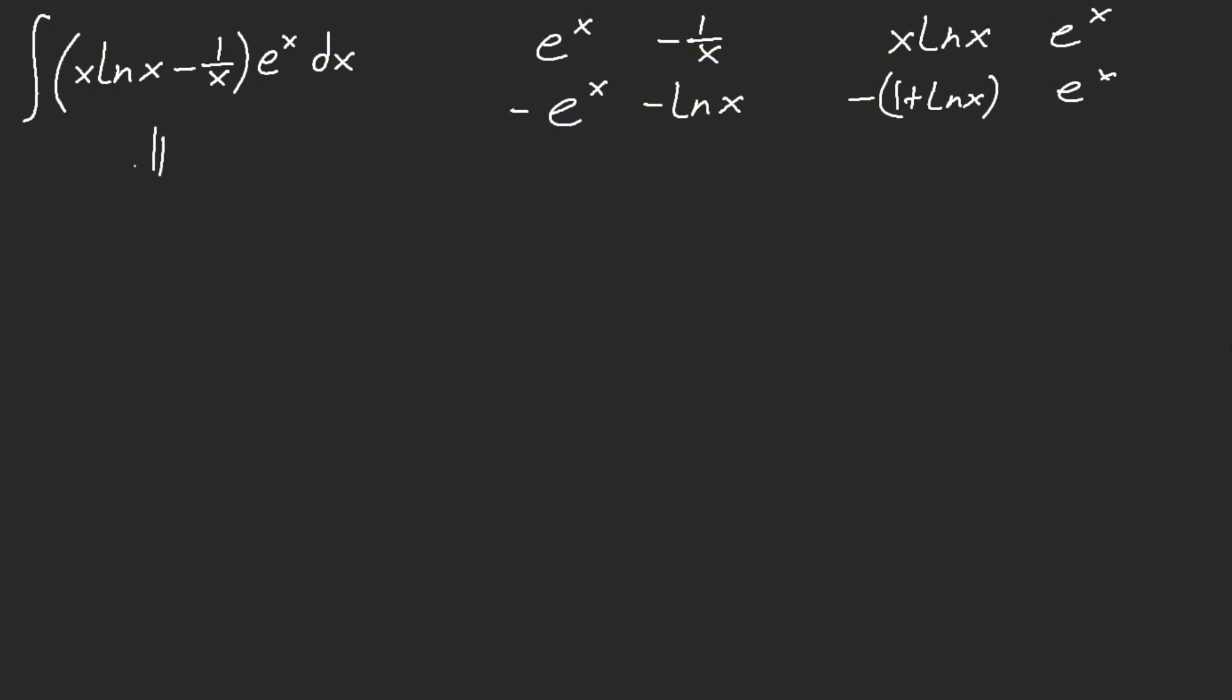So, this is equal to, well, let's start with this, because it's positive, negative x, e to the x ln of x, minus e to the x ln of x, right? And then, what we have is we have a positive e to the x dx,